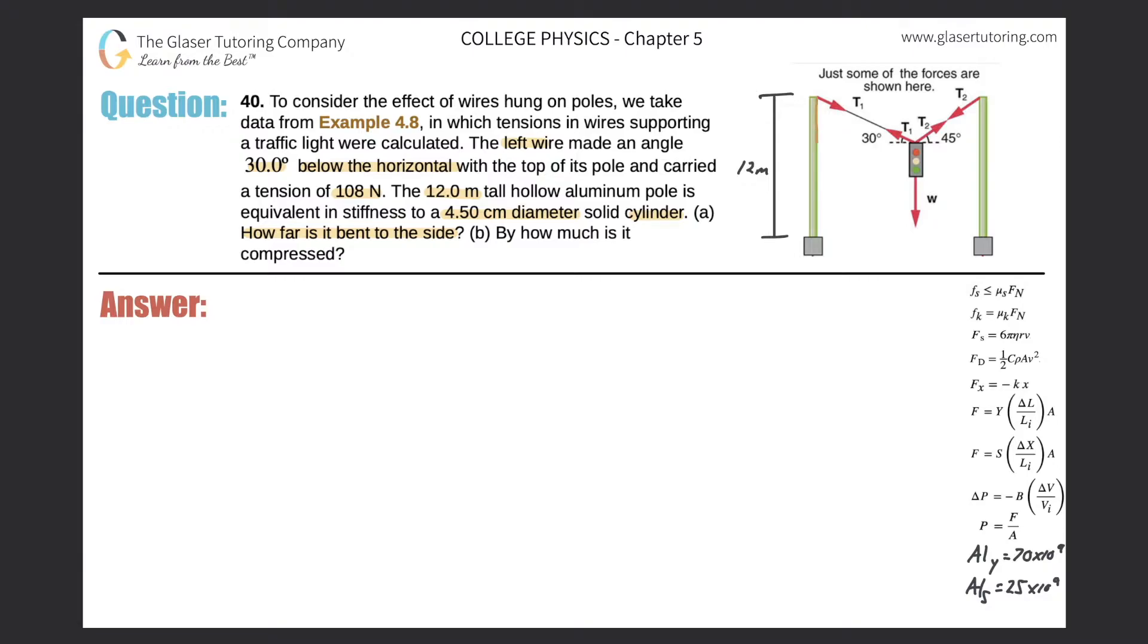So here we have one side, the other side, and then here's the resultant. Now the resultant is the tension. That's what they told us, that the tension in that cable is 108 newtons. So this value up here is 108 newtons.